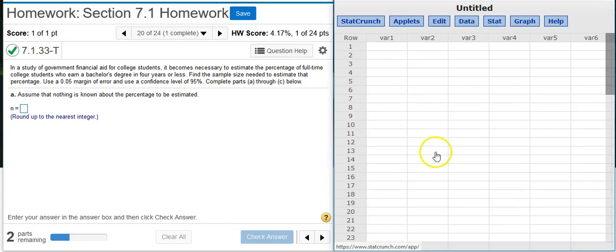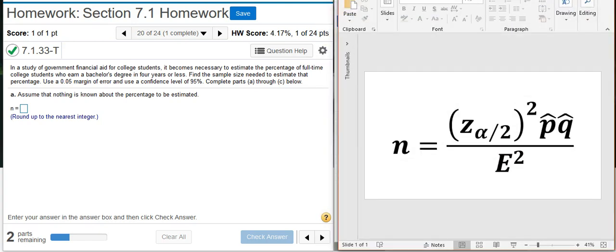This means we have to go old school. So here's our equation for estimating sample size. We need a z-score, which we then square, multiply by p-hat, which is the percentage that we want to be successful. q-hat is the complement of p-hat, and then we divide all that by the margin of error squared.